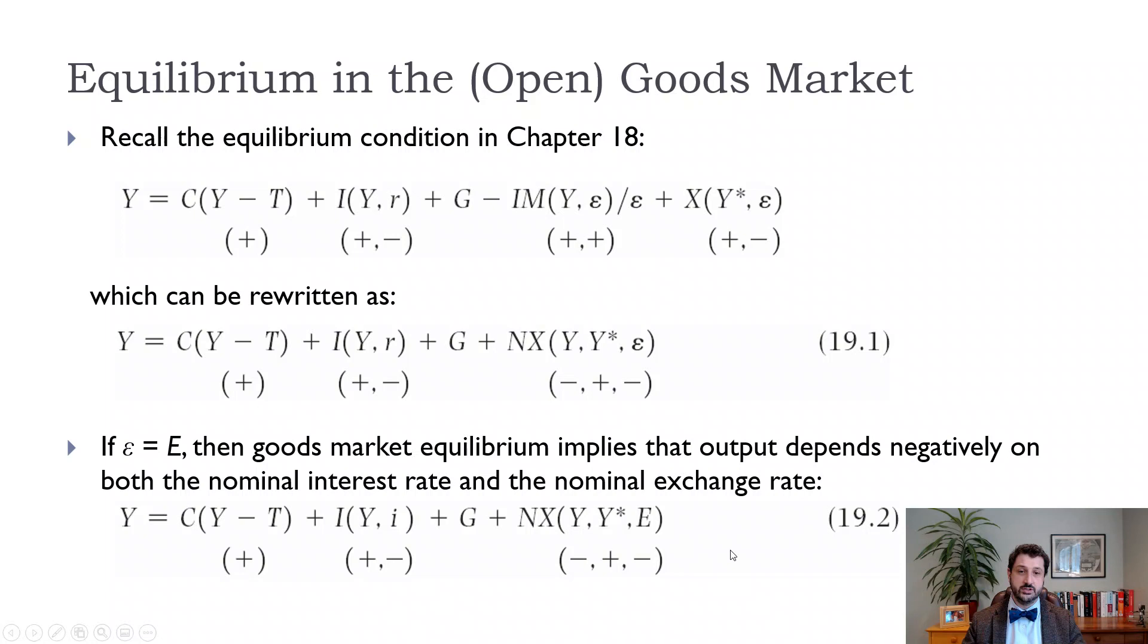Now we want to look at equilibrium in the financial markets, and we're going to use our interest parity condition from Chapter 17, where we have the nominal exchange rate E equals 1 plus i over 1 plus i star times the expected future exchange rate. We're going to assume that the expected future exchange rate is fixed, so the current exchange rate is going to depend on this ratio between domestic interest rates and foreign interest rates. If the domestic interest rate goes up, the current exchange rate will go up.